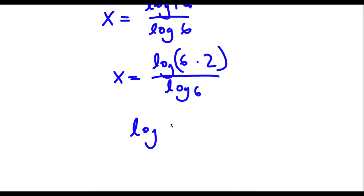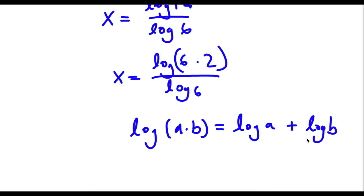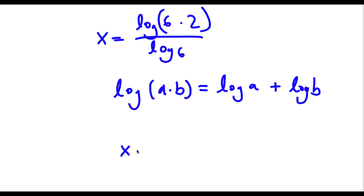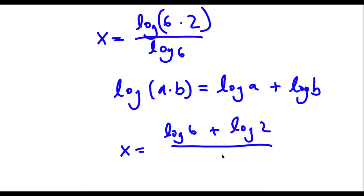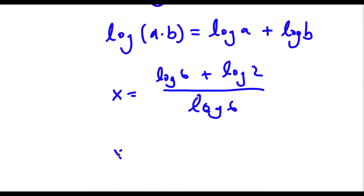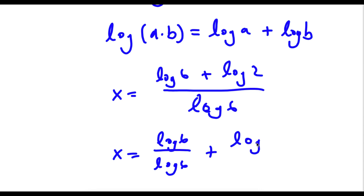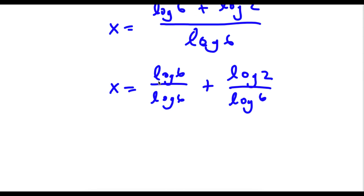Now if I have something in the form log a times b, this is equal to log a plus log b. So log 6 times 2 is going to equal log 6 plus log 2, and I have this over log 6. Now this is the same thing as log 6 over log 6 plus log 2 over log 6. So these two cancel out and I'm left with x is equal to 1 plus log 2 over log 6.